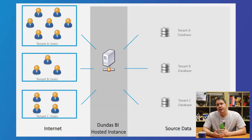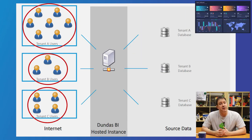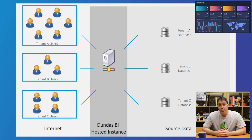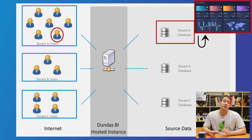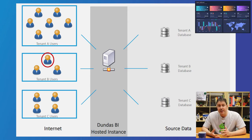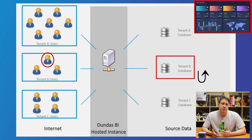Another huge benefit is the case where you have shared and templated content, and you want users to see their own version of it. This diagram will help you understand. Let's say you've built a dashboard that every user can use, but they should only see their version of it. In this case, you would use a feature called Data Connector Override, which allows the dashboard to pivot based on who is viewing it. A user in Tenant A opens the dashboard, and Dundas BI pulls the data from Tenant A's version of the database. Tenant B does the same and only sees their own data. The shared dashboard would never show data from a different tenant.